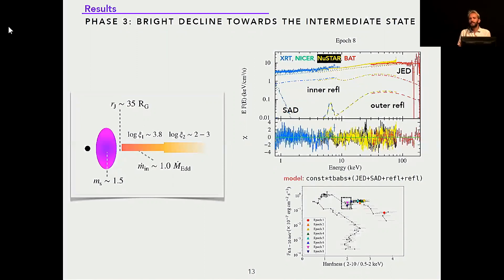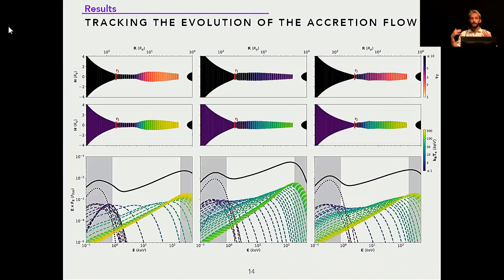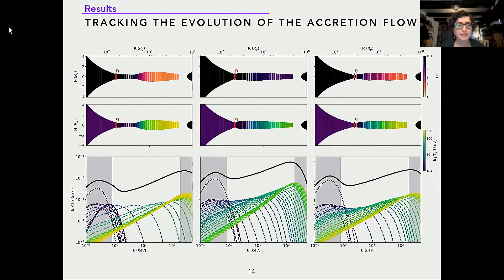There is then a plateau phase in the hard-intermediate state where we now need two reflection components. The disk is still truncated, but a little bit closer to the black hole. The inner mass accretion rate at the peak of the outburst reaches even two times the Eddington mass accretion rate. The two reflectors have different ionizations: the inner one is highly ionized while the outer one is mildly ionized. Finally, there is a third phase with a short episode of re-hardening: the inner radius continues approaching, still with two reflections, and the sonic Mach number increases, meaning the accretion flow is a little less dense as it proceeds faster.